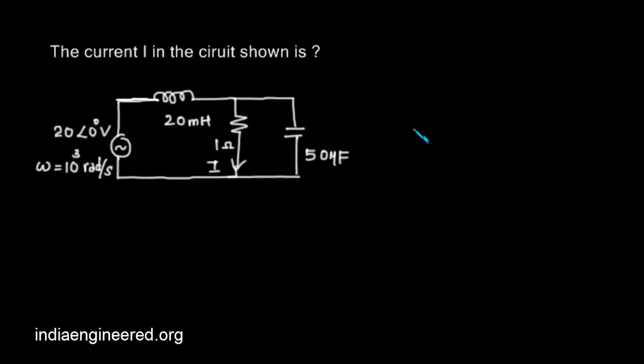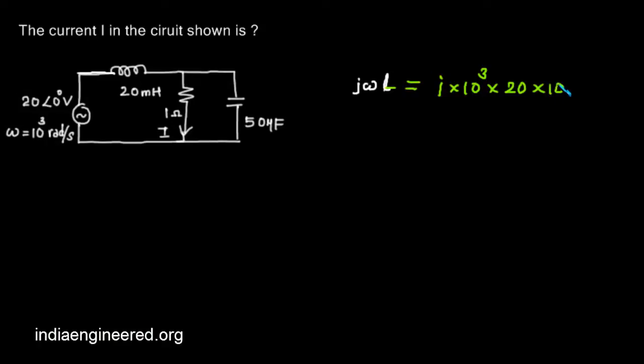What is the impedance here? That is jωL, that is equal to j into 10^3, which is omega, into the inductance that is 20 × 10^-3 henry. That is 20j.